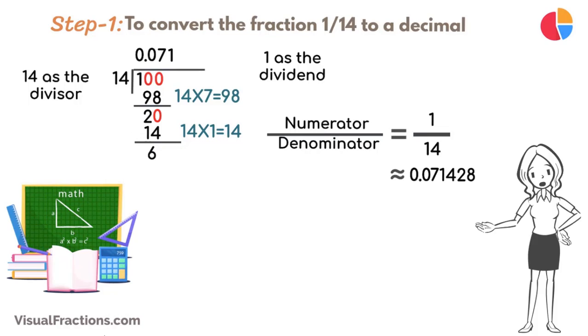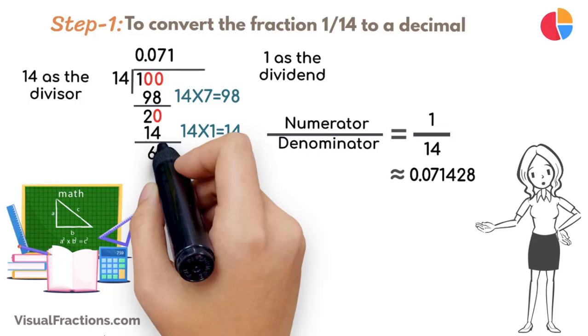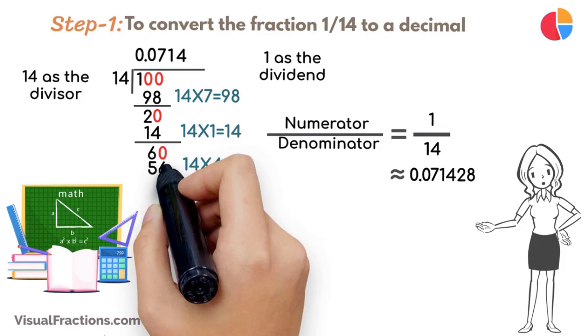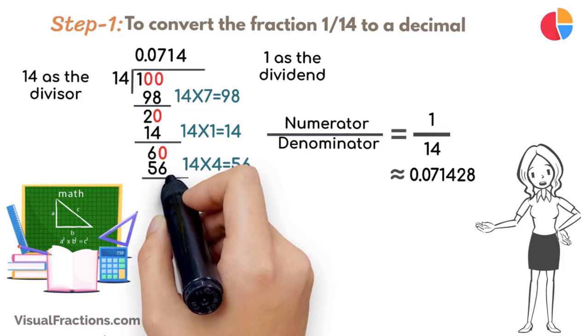Continue by bringing down another 0 to make it 60. 14 goes into 60 four times, updating the quotient to 0.0714. Multiply 14 by 4 to get 56, and subtract this from 60, leaving a remainder of 4.